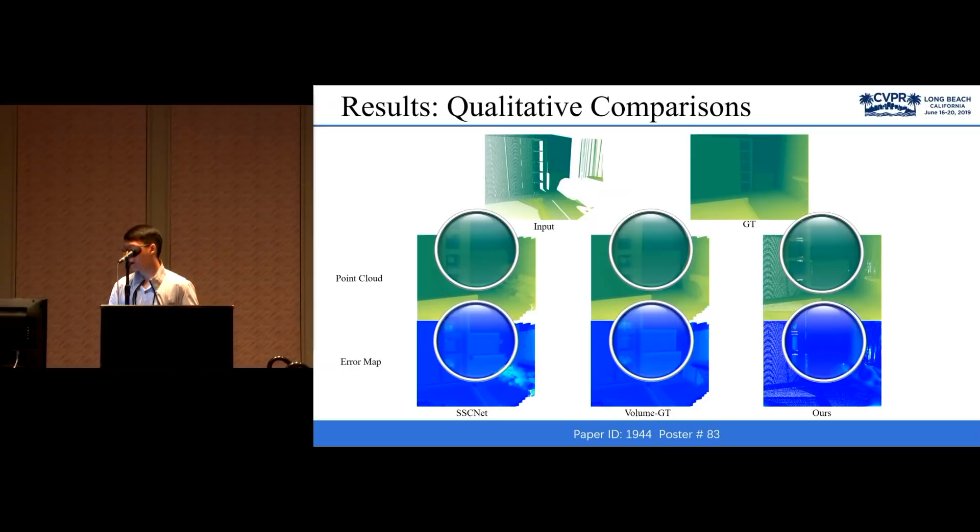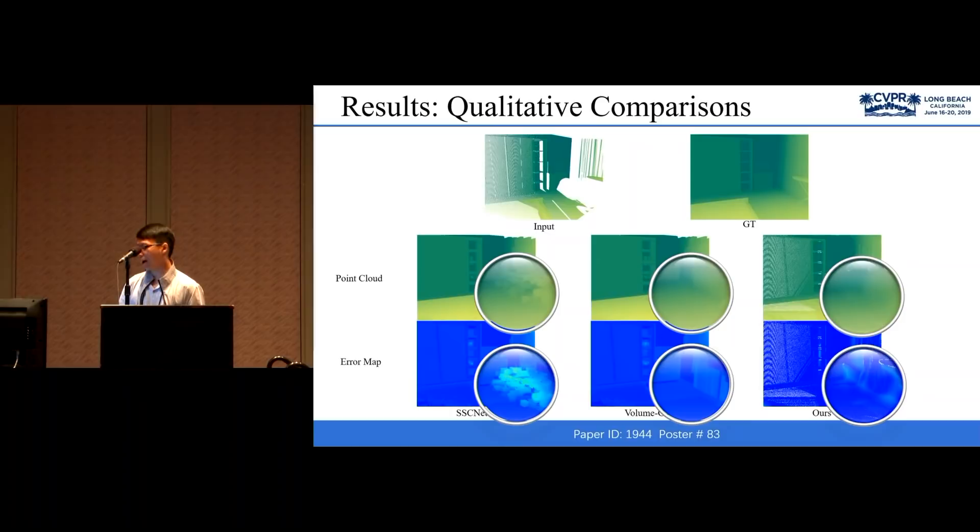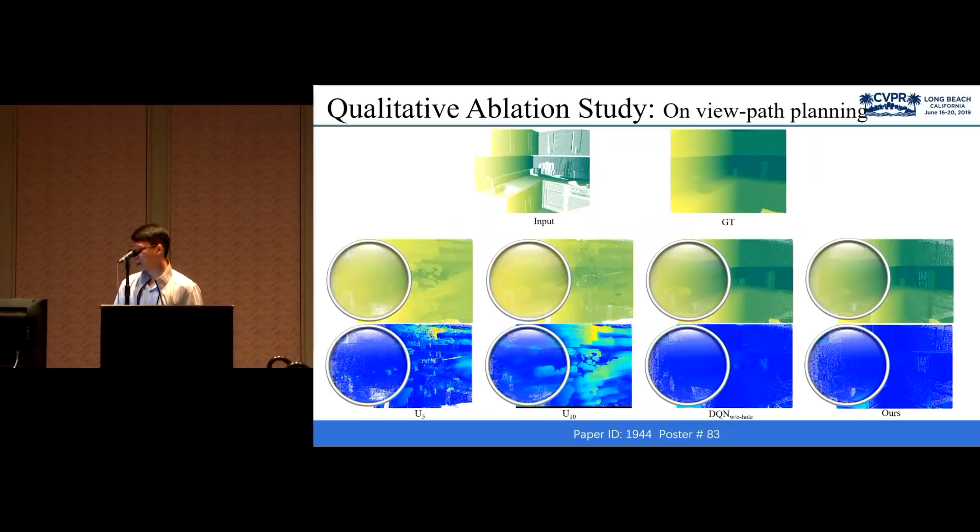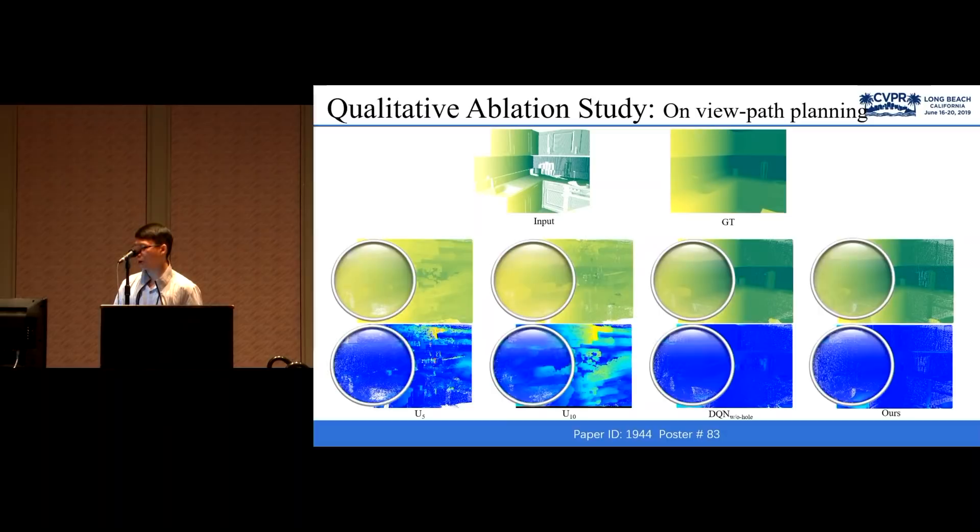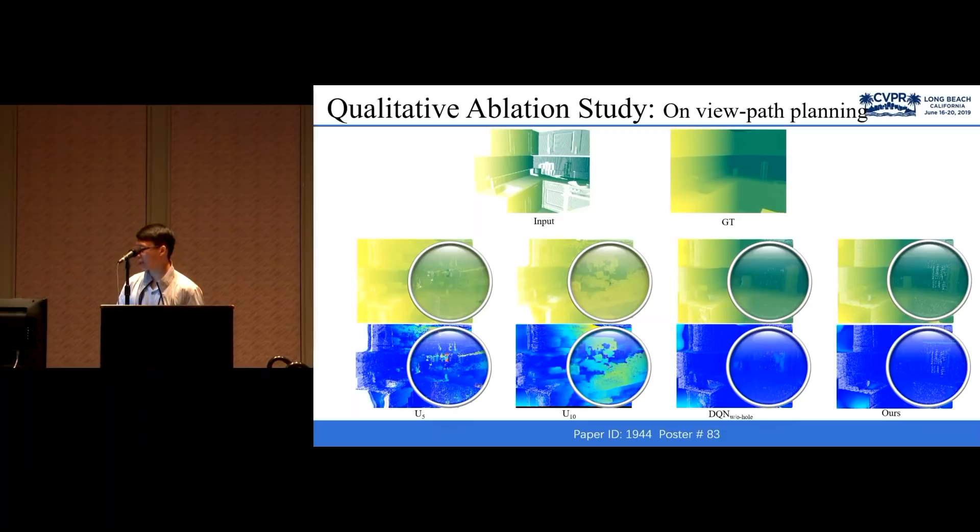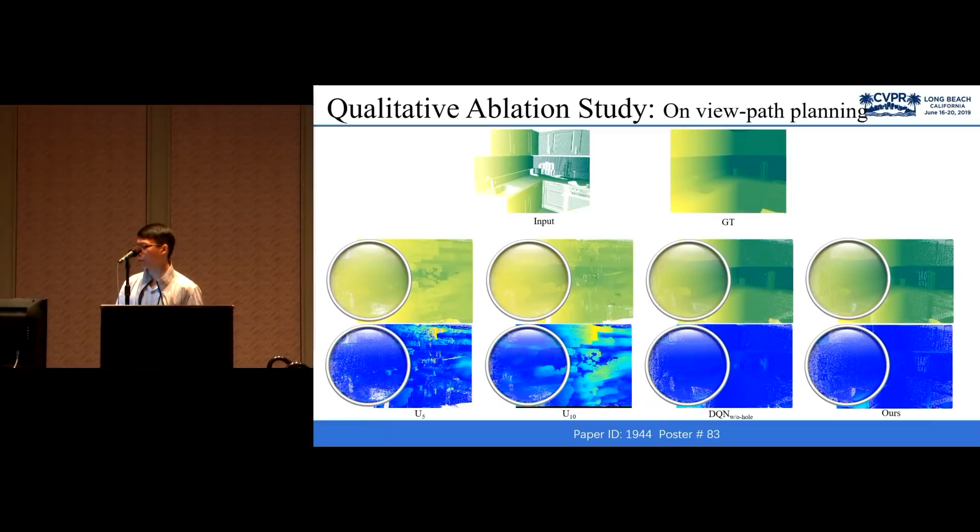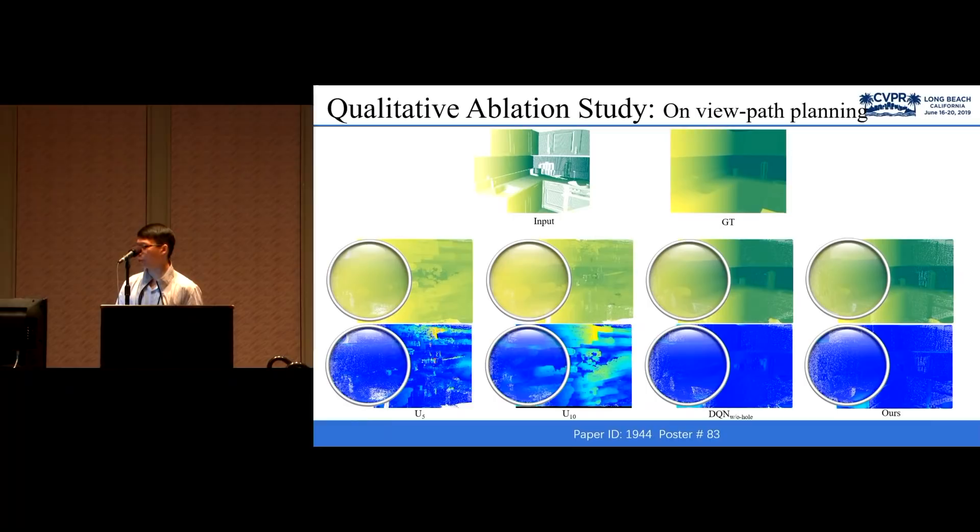Next are the qualitative comparisons. The first row are input and ground truth. And below, from left to right, the results of SSCNet, volume GT, and ours. Here are ablation study results. Also from left to right, there are U5, U10, and ours. You can see different choices of view paths will lead to different results. Also we test our network on NYU depth dataset and also get good results. And that's all. Thanks for listening.